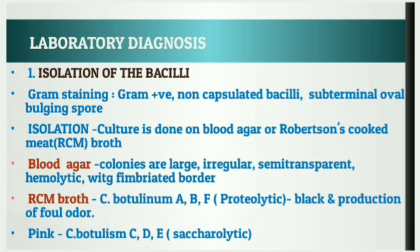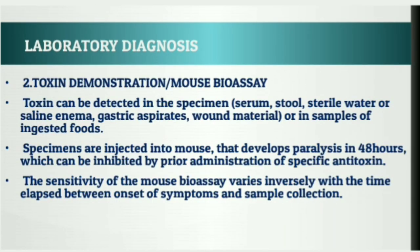In RCM broth, Clostridium botulinum types A, B, and F are proteolytic and turn the meat particles black with production of foul odor. Types C, D, and E are saccharolytic and turn meat particles pink. Growth on culture media may be confirmed by gram staining and biochemical tests. Serotyping is done with type-specific antiserum. For toxin demonstration, the mouse bioassay is used: the specimen is injected into a mouse, and if botulinum toxin is present, the mouse develops paralysis within 48 hours, which can be inhibited by pre-administration of specific antitoxin.